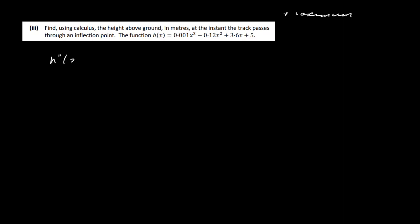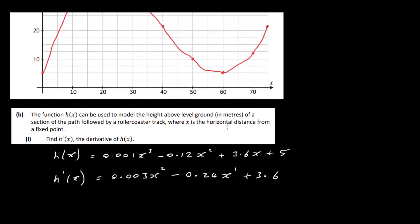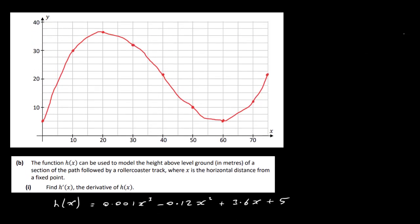So we need h''(x). So again, that's equal to 0.006x - 0.24. What we've got to do is let that equal to 0 to find the x value. So we have 0.006x is equal to 0.24, and then we've got x is equal to 0.24 divided by 0.006, and that actually gives you an x value of 40 here. So we can see from the graph here that it does look like it's going to be here at 40.